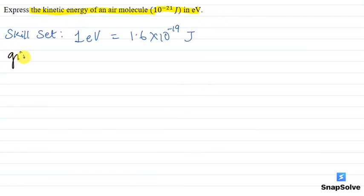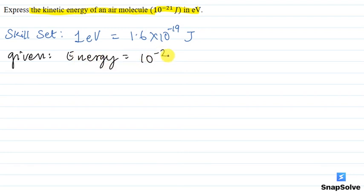We have been given here that energy is equal to 10 raised to the power minus 21 joules. This is the kinetic energy of an air molecule, and we will convert it into electron volt.